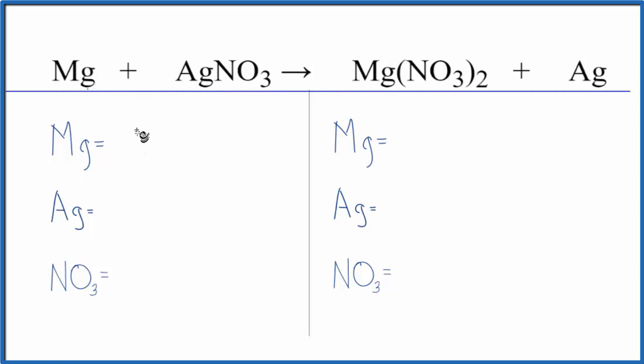Let's count the atoms up. One magnesium, one silver, and this is a trick we can use when we have a polyatomic ion like nitrate, NO3. We have it here, it stays together. We have it over here. So we can just call it one thing, and that makes it a lot easier to balance. We have one nitrate ion.